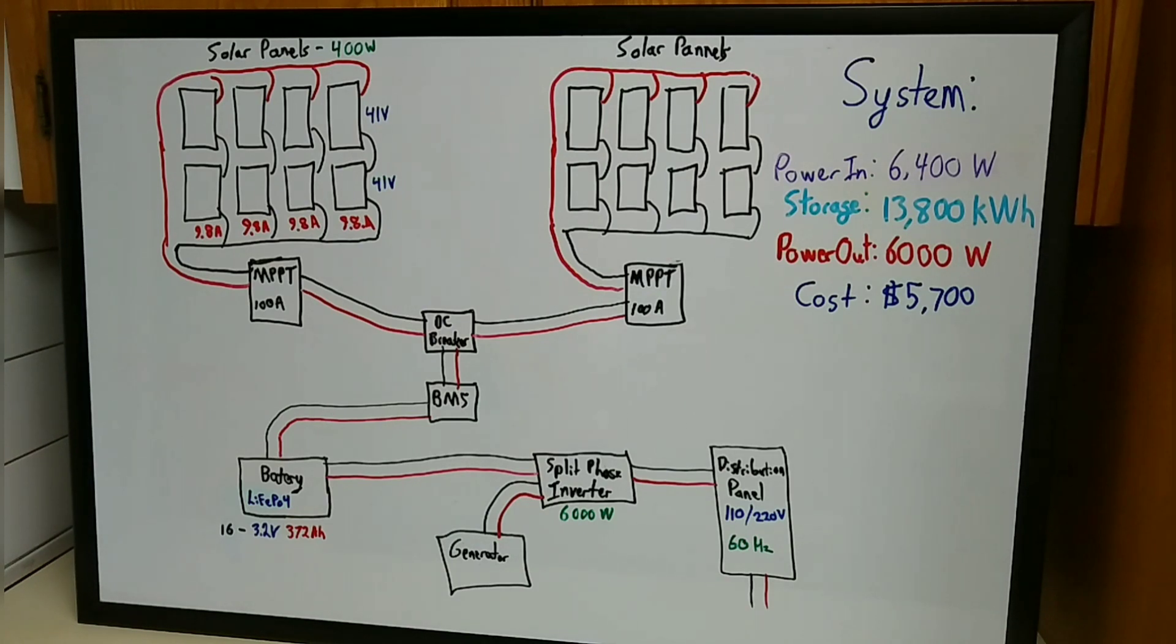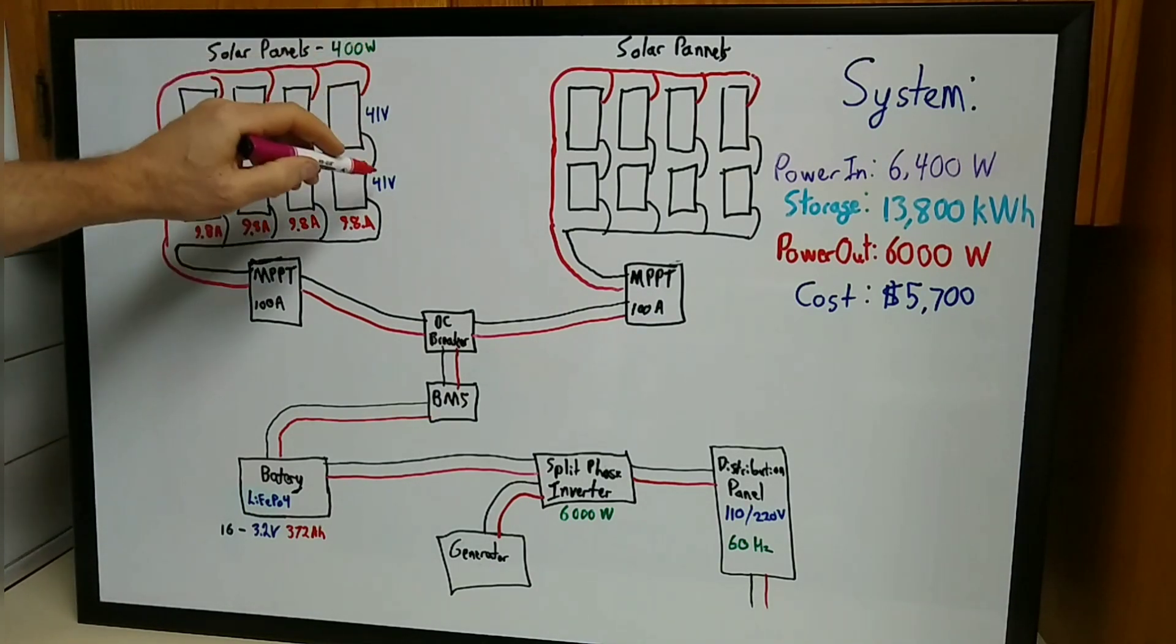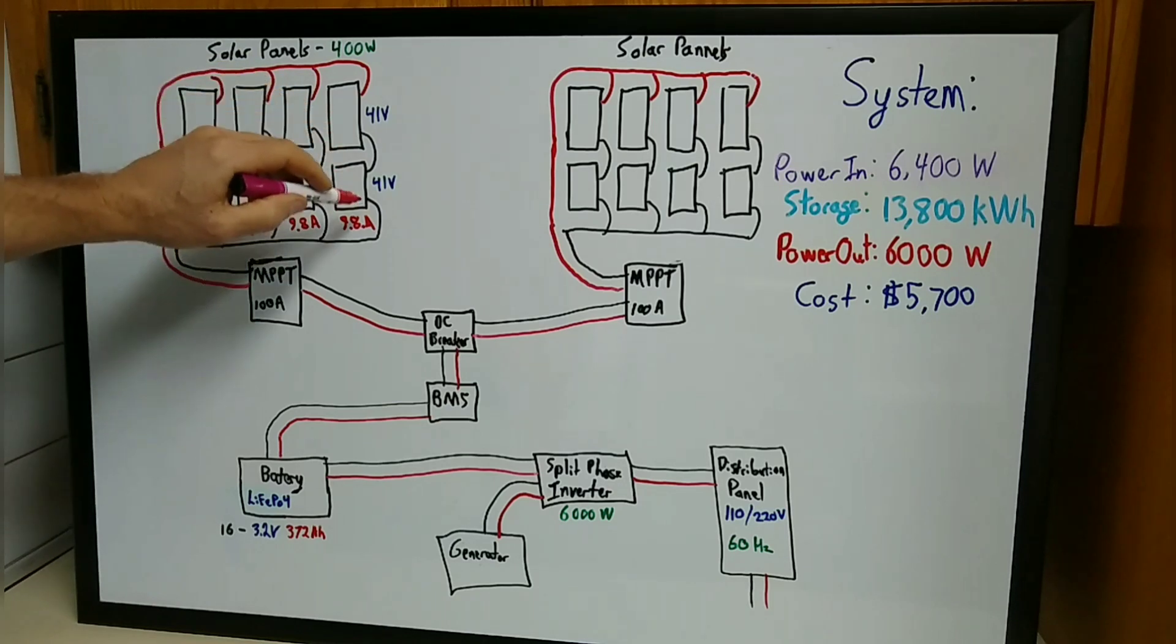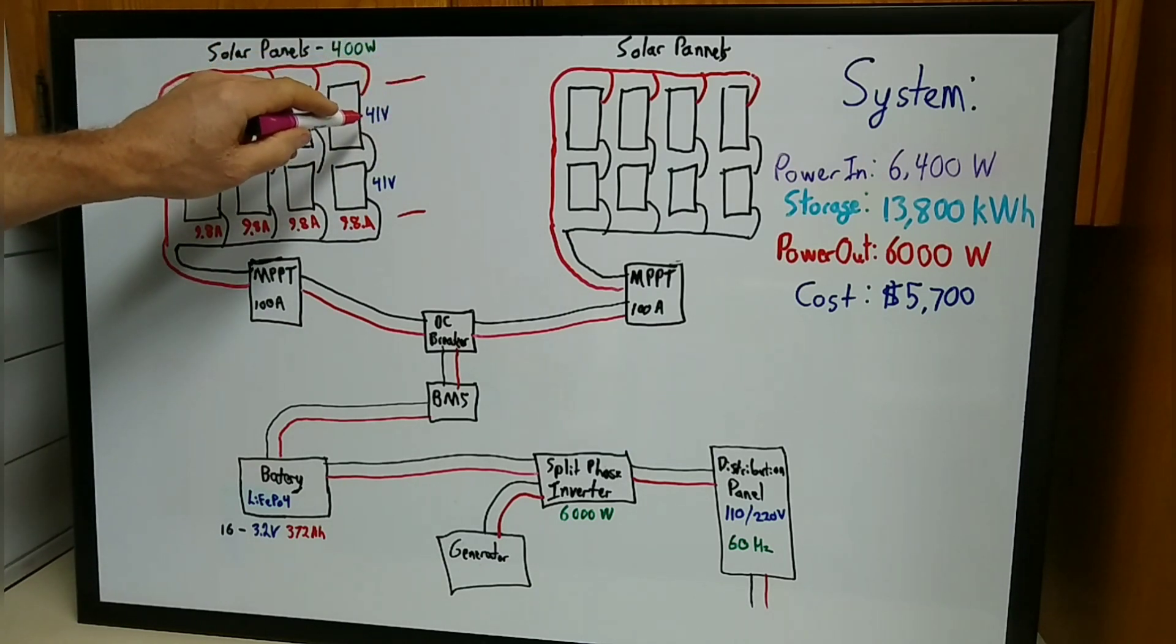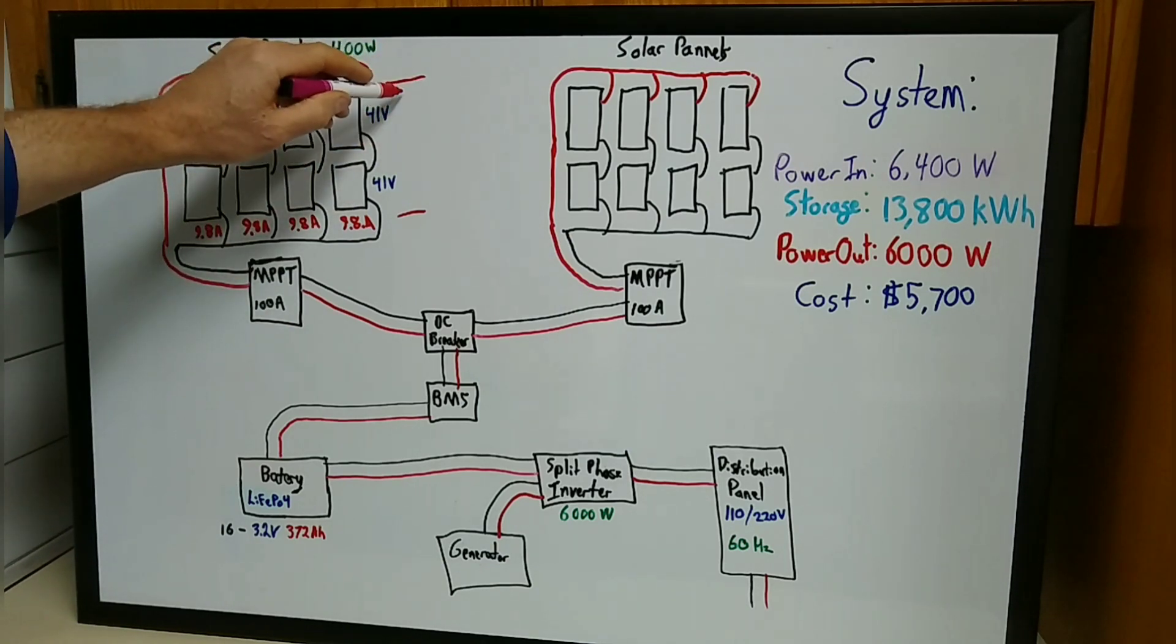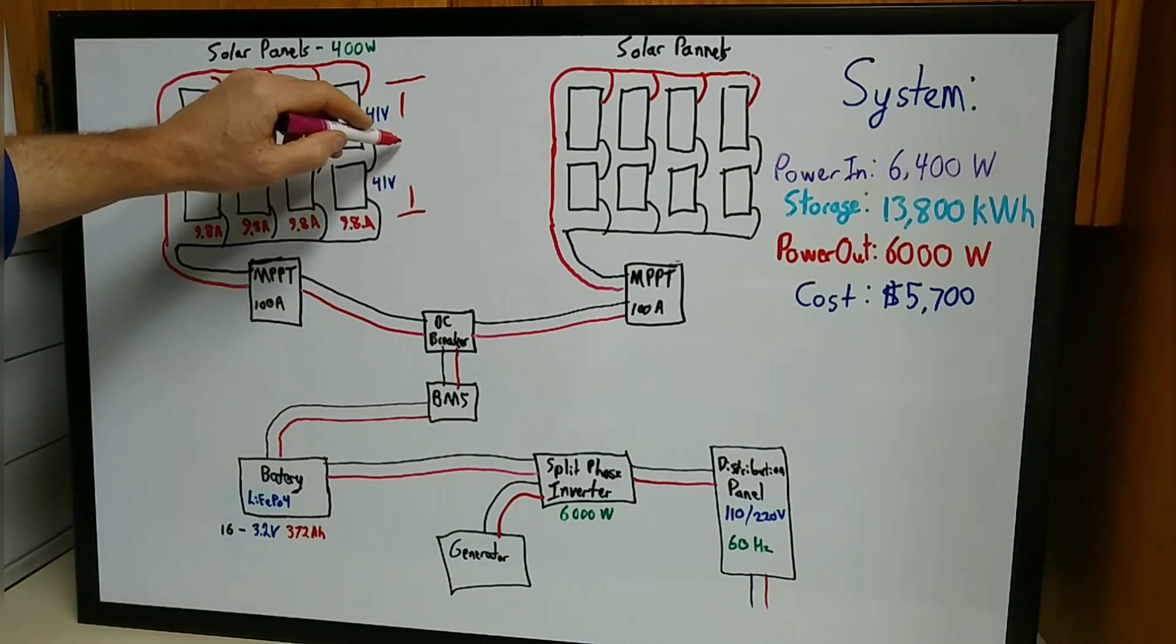I'd like to go into more detail on how to calculate your voltages and amperages and explain a little about series and parallel. When you do a series connection, your amps stay the same but your voltages add up. Series is when you connect two together like this. These two are connected in series. Each one of these panels puts out 41 volts, so when we connect the two together, we get 82 volts.